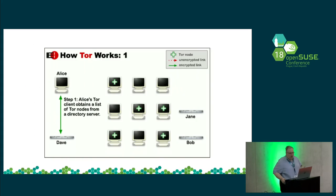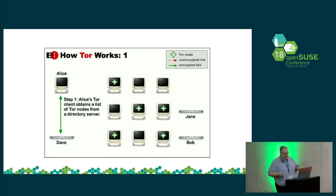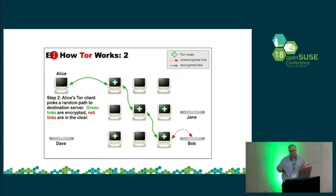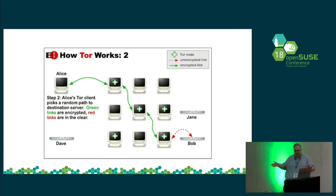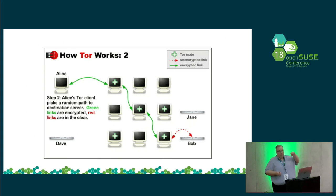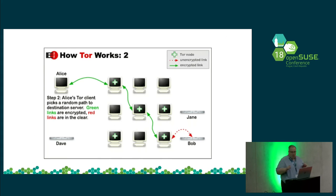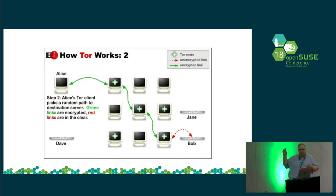How does Tor work? Tor works basically like this. Alice's Tor network obtains a list of Tor nodes from the server directory. Her Tor client, which is normally the Tor browser, picks a random path to the destination server. Green links are encrypted, red links are in the clear. Anything inside of the Tor network is encrypted — it doesn't matter if they're using HTTPS or HTTP, it doesn't matter the protocol, it's encrypted. But once you leave the Tor network, it's normal traffic.